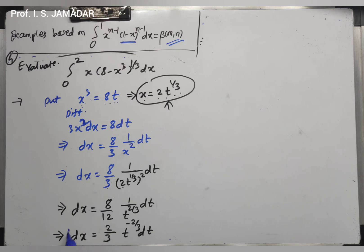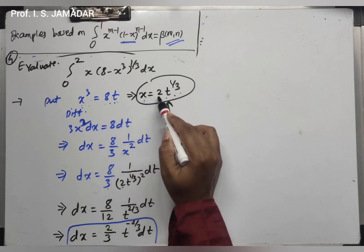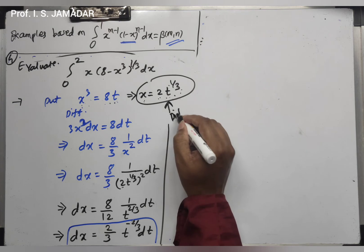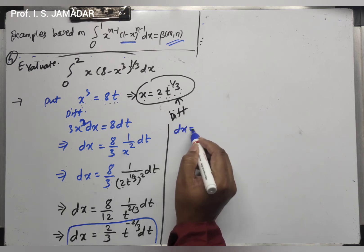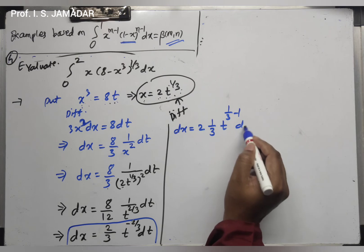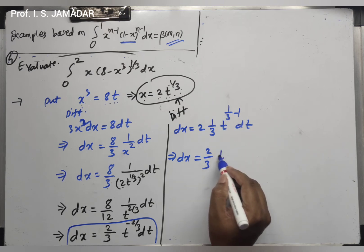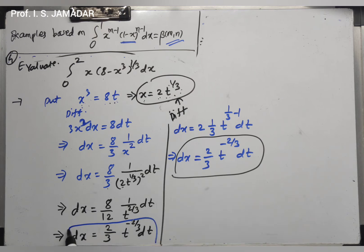With these substitutions, I equals integration from 0 to 1 of (2t^(1/3)) times (8t)^(1/3) times (2/3) t^(-2/3) dt. Taking constants outside: 2 times (2/3) = 4/3. By law of indices, t^(1/3) times t^(-2/3) gives t^(-1/3). Also taking 8^(1/3) = 2 outside the bracket leaves (1-t)^(1/3). So I equals (4/3) times 8^(1/3) times integration from 0 to 1 of t^(-1/3) times (1-t)^(1/3) dt.